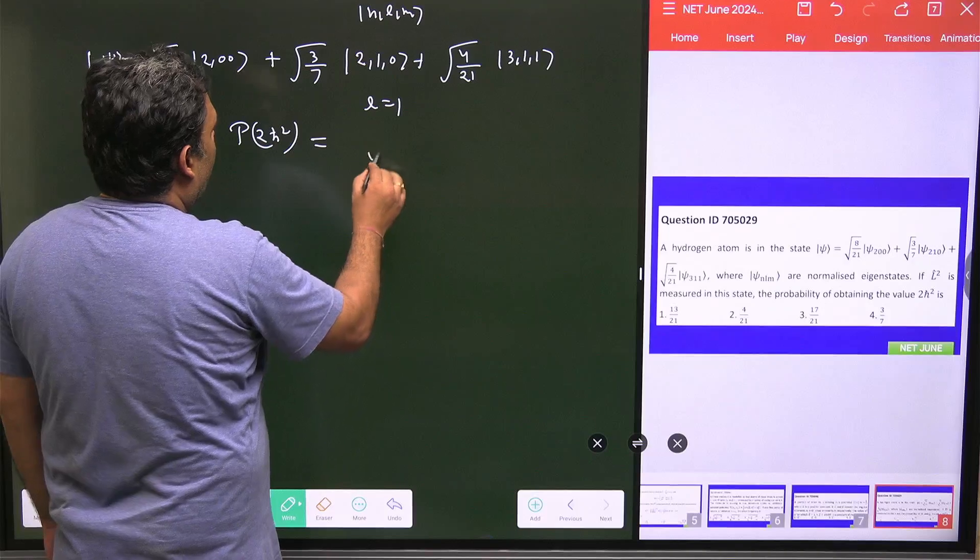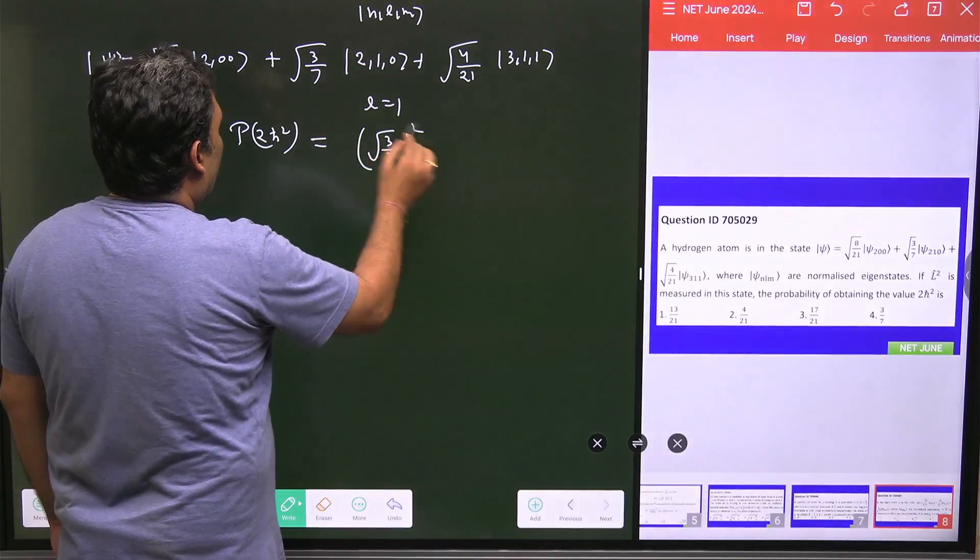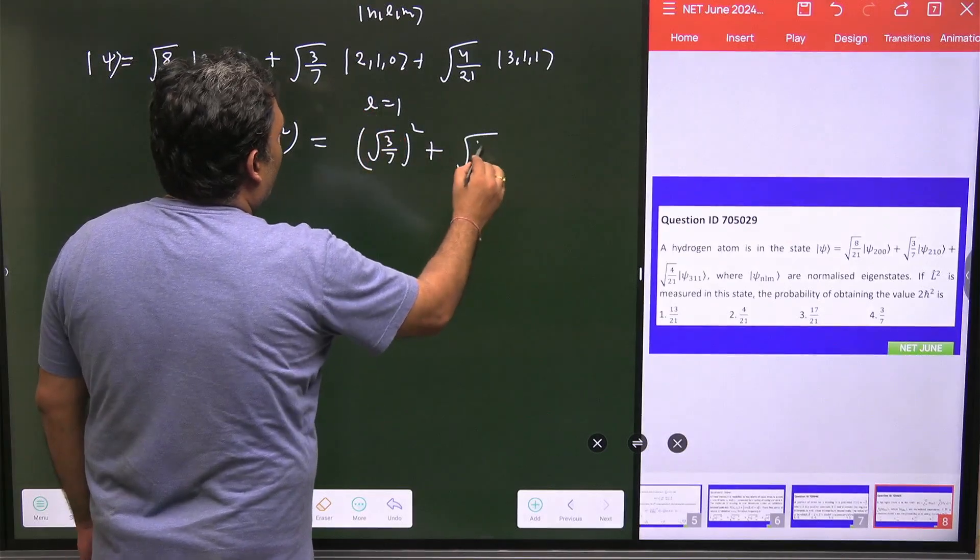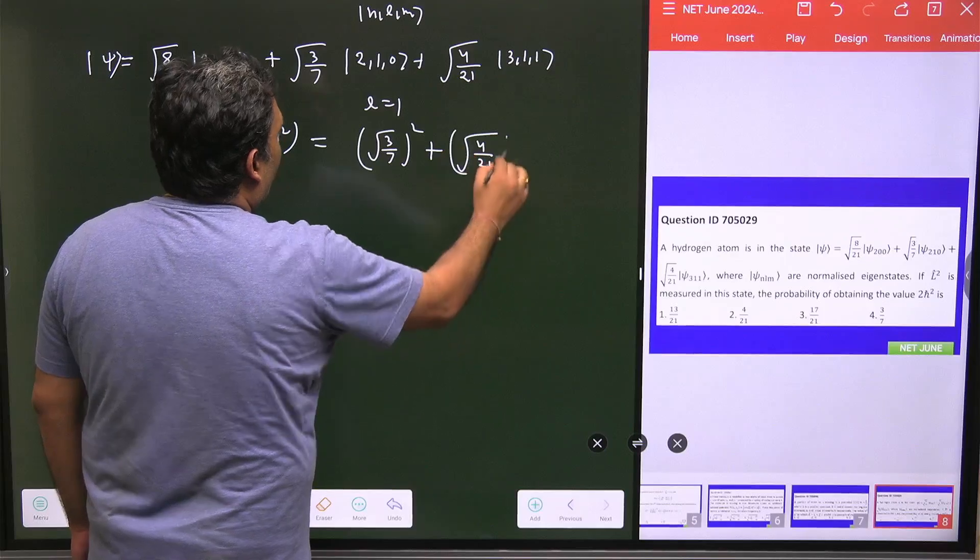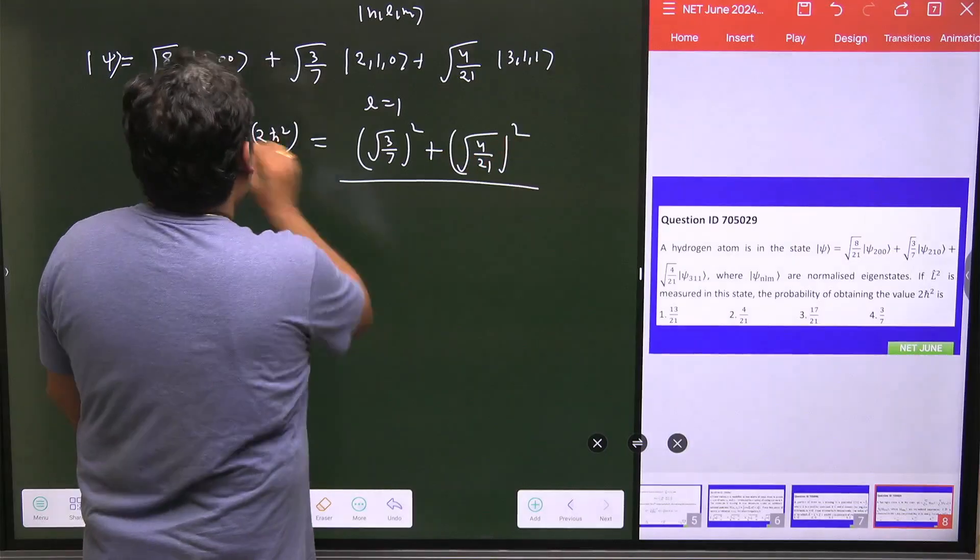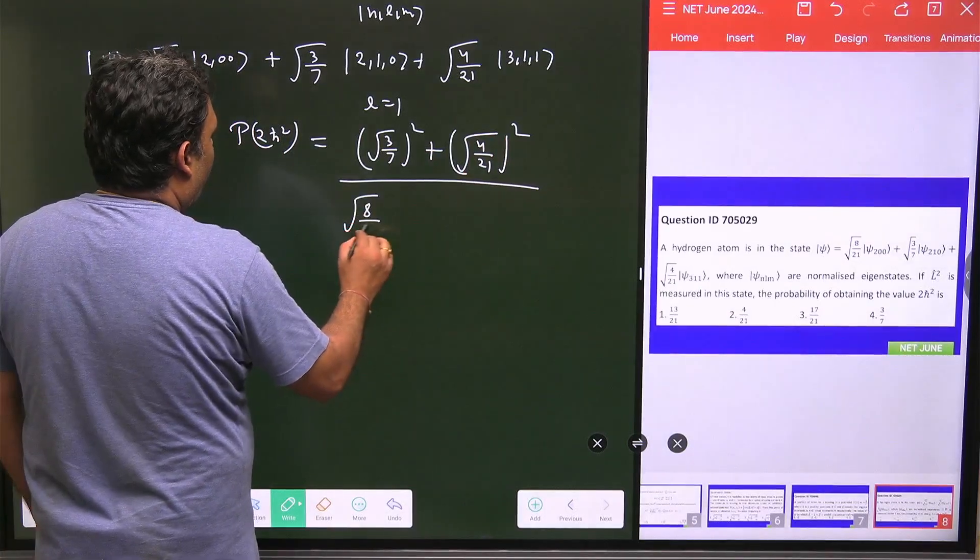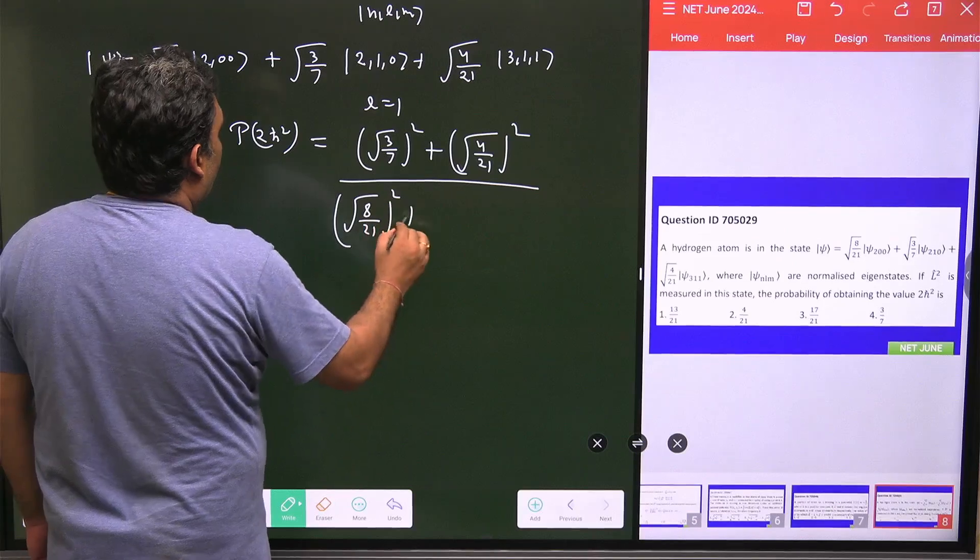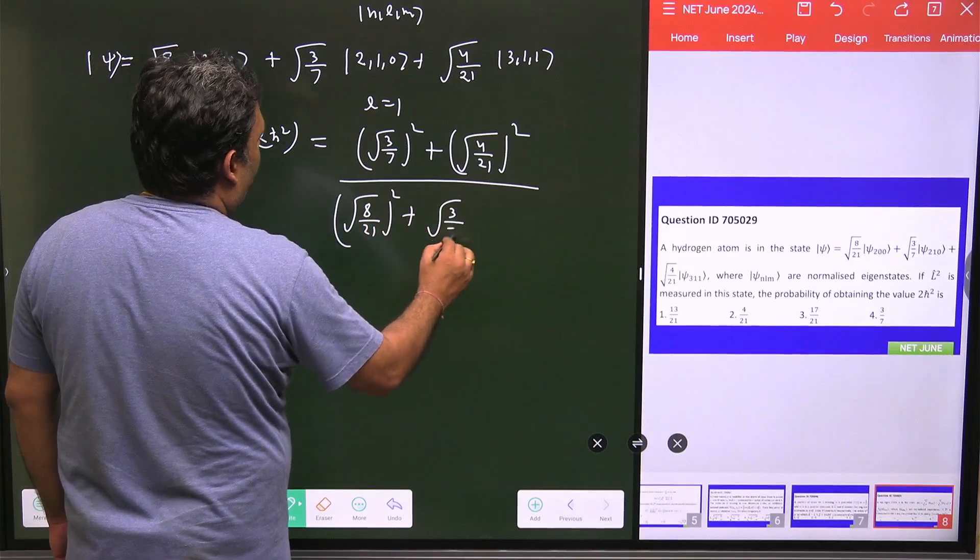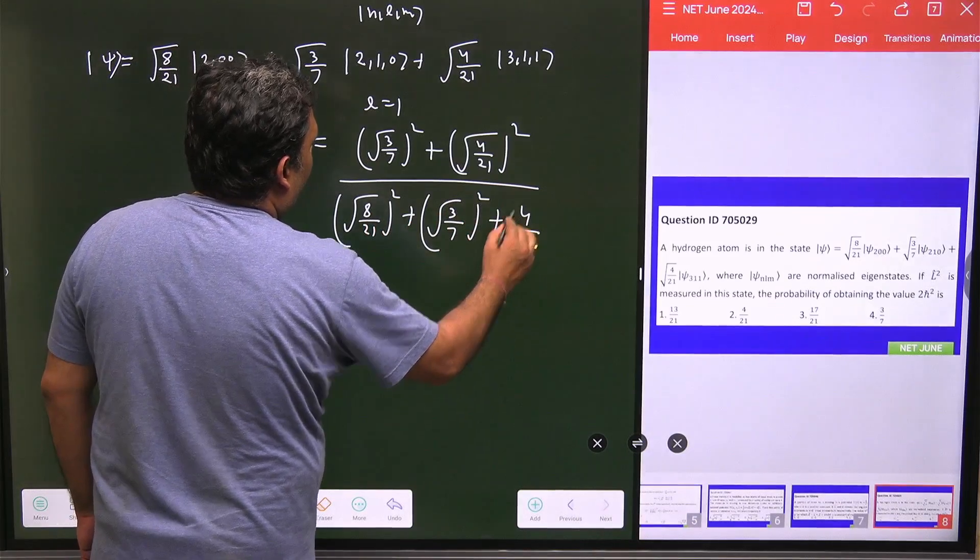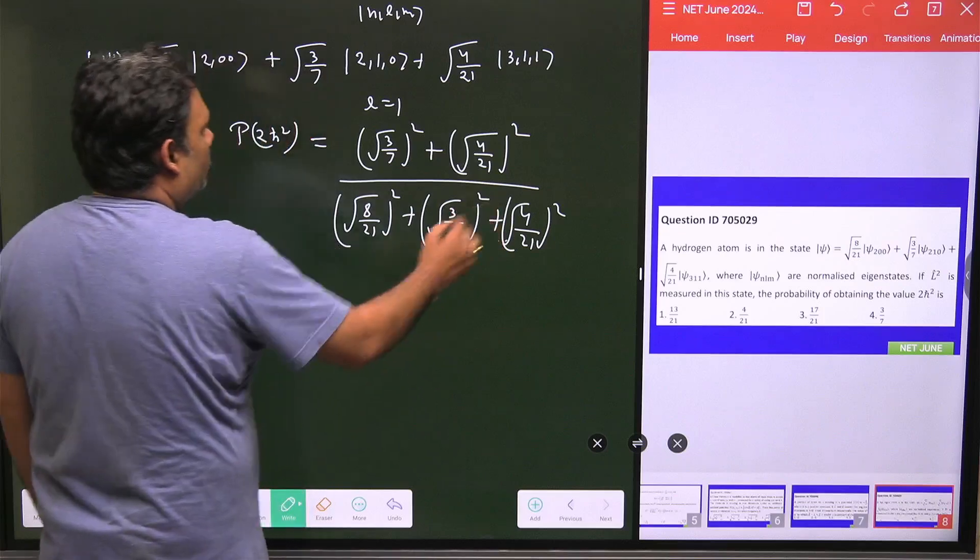So probability of 2ℏ² is equal to √(3/7) whole square, this is just a real number, as well as √(4/21) whole square. And obviously we have to take care of normalization. So we have (8/21)² plus (3/7)² plus (4/21)².